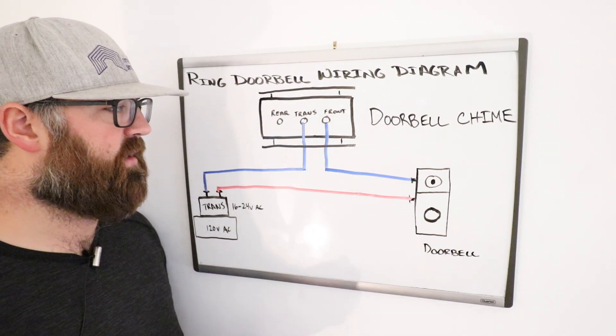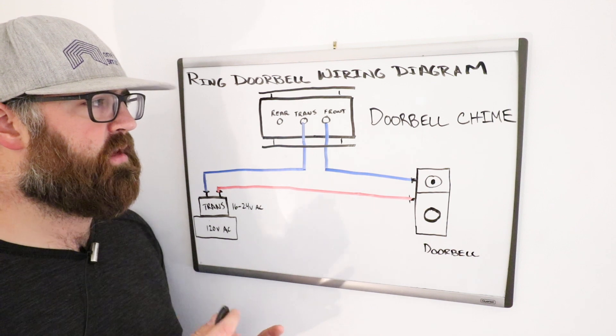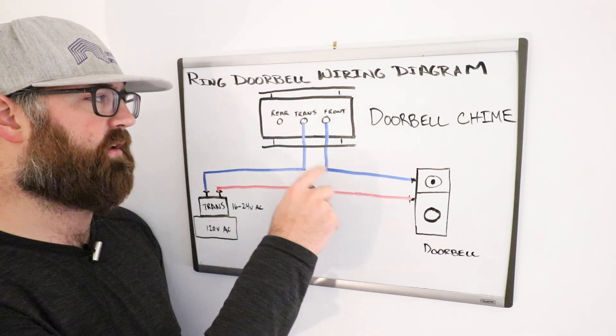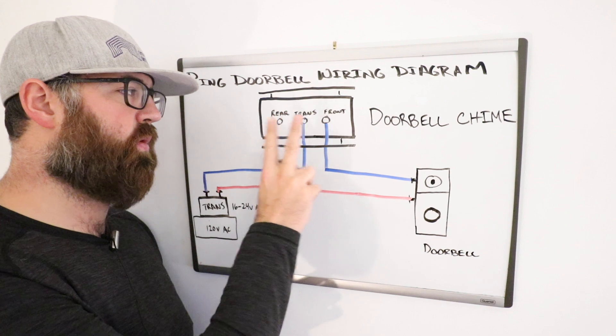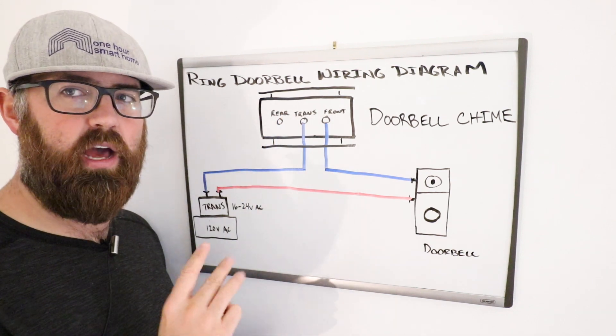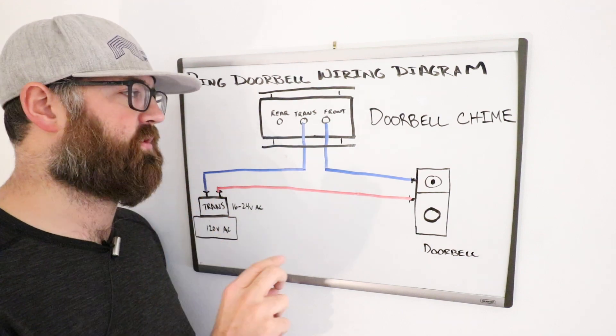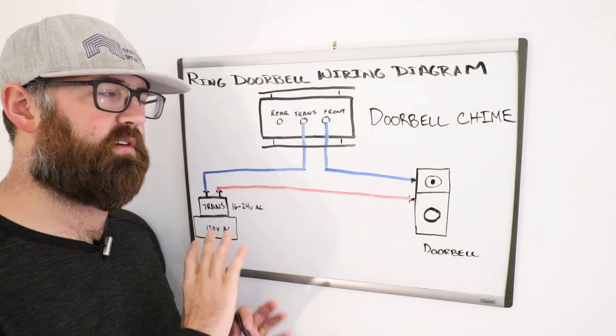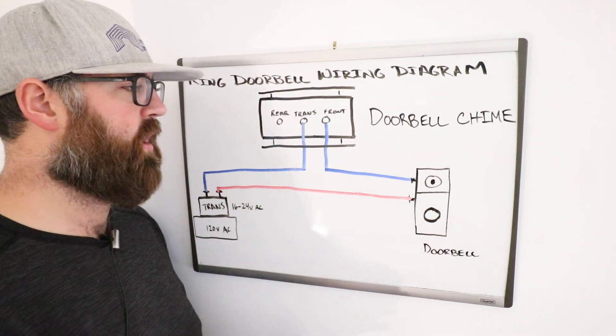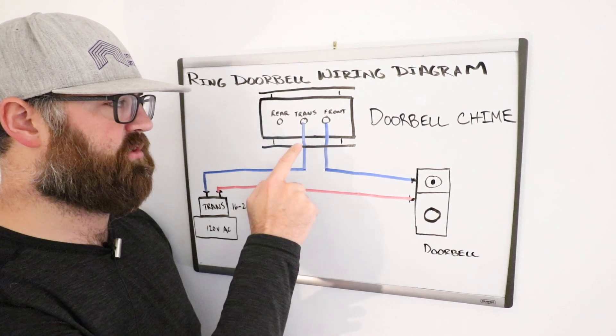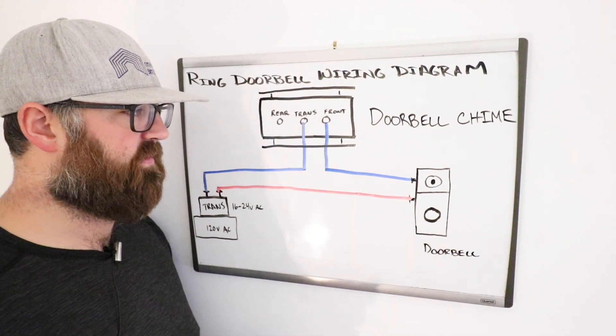And there's a little terminal there and that's where you're going to connect it. And then the other wire that you're going to see usually going into your doorbell chime, you're going to have two wires that should go in unless you've got a three wire chime and two doorbells, which we'll cover that in another video. But this is for most people, the standard setup, you're going to have two wires coming in. One goes to the trans and the other one's going to go to the front.